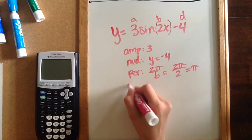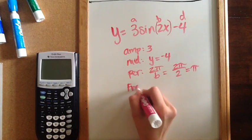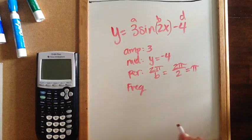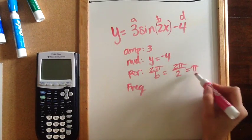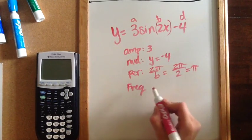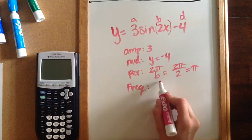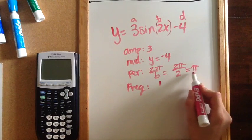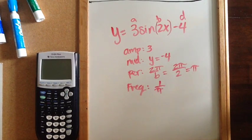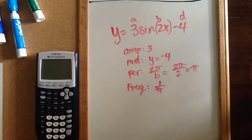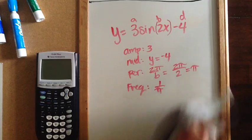We also have something called the frequency, which is the reciprocal of the period. So I take the period pi and flip it: the frequency is 1 over pi. So that's all of my information for the graph.